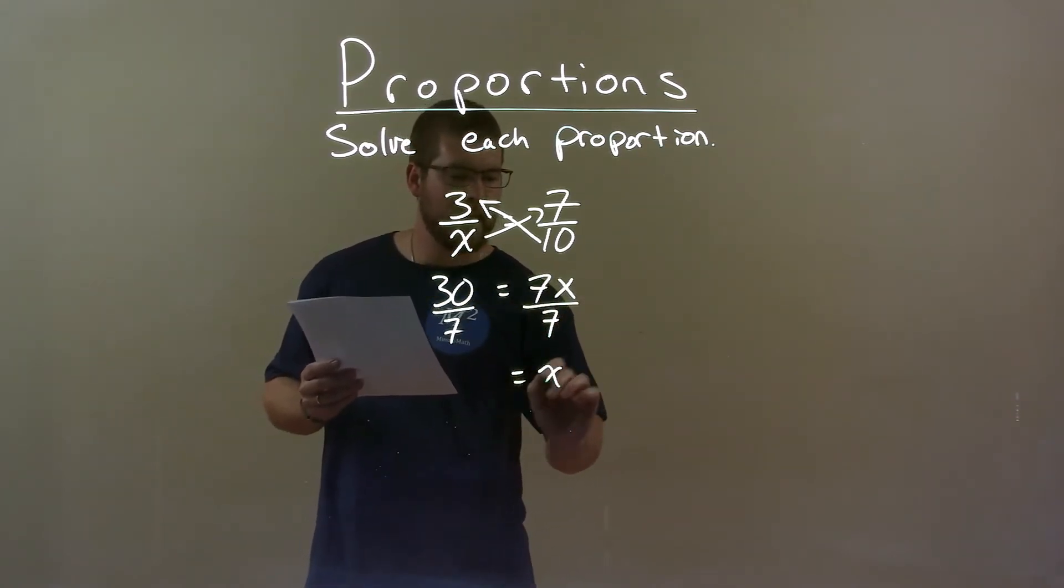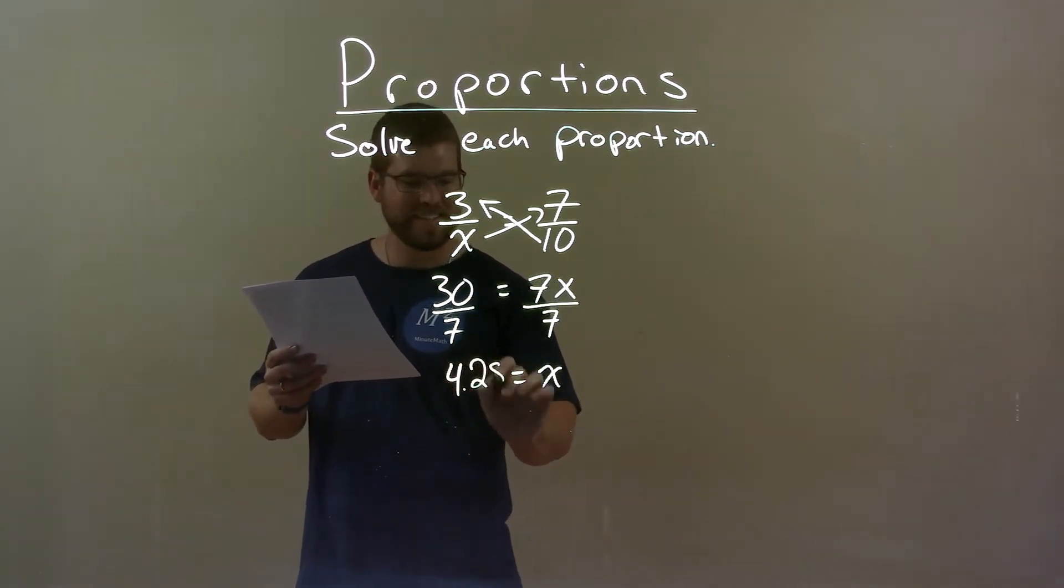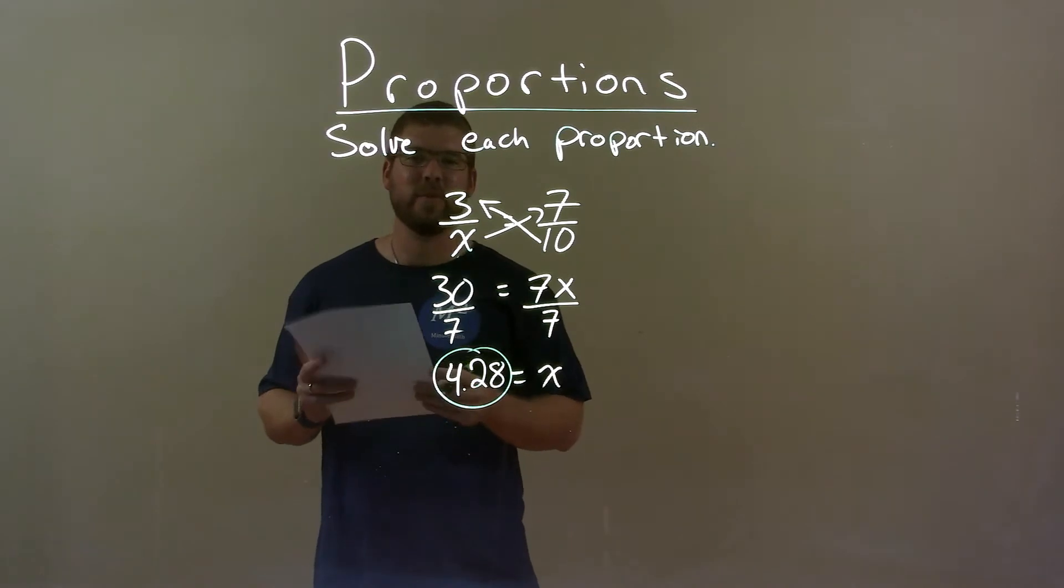This gives me x by itself, and 30 divided by 7 is 4.28. So, there is our final answer.